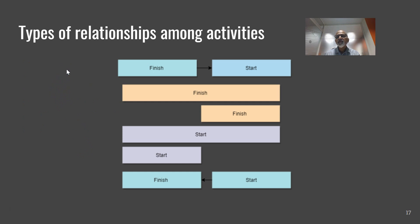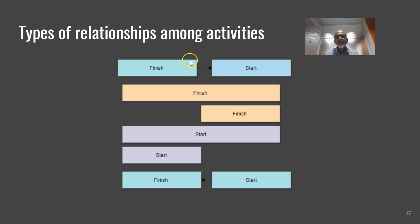Between two activities there are four types of relationships. The first is Finish to Start — something has to finish for me to start something else. For example, I must complete requirements collection before I start design work. That is an example of Finish to Start.